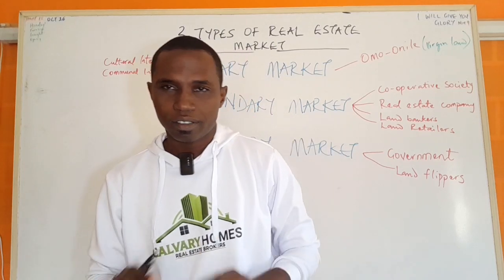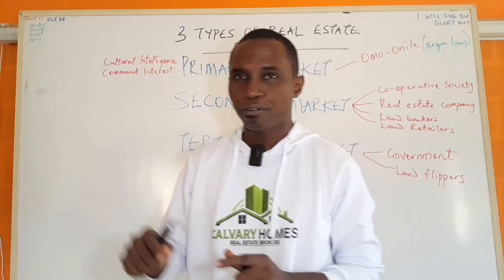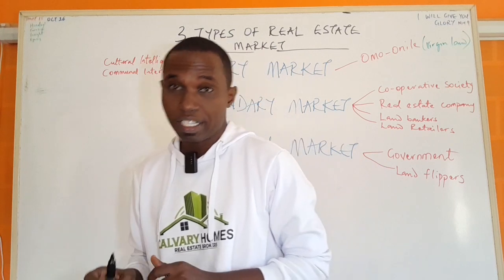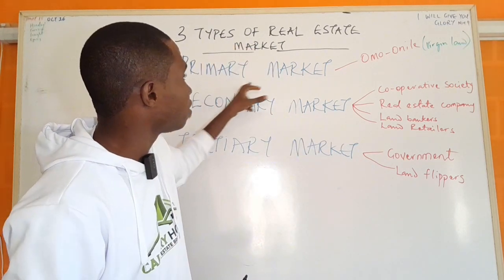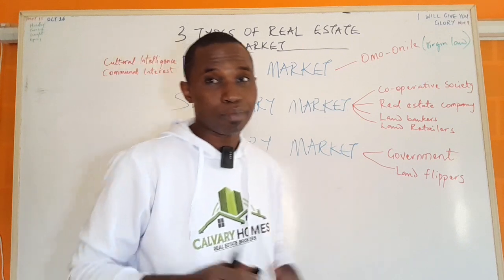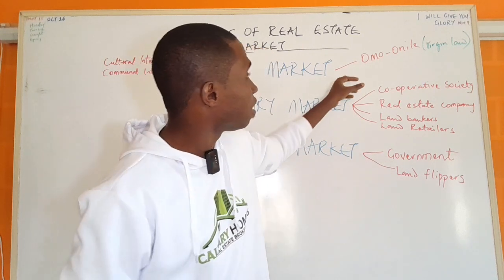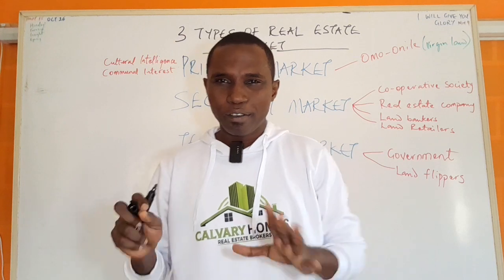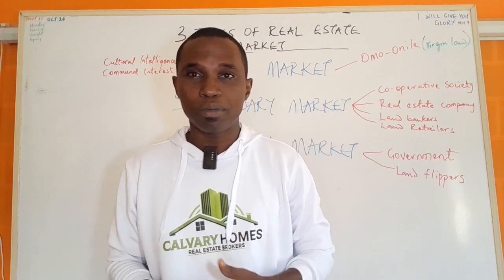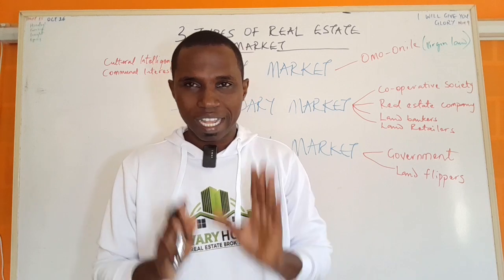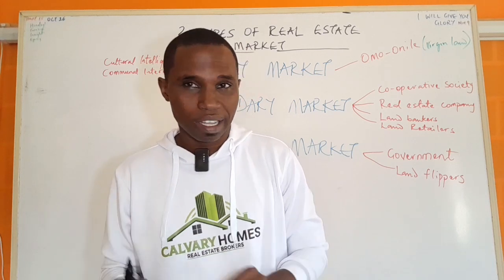Let's talk about the three types of markets in real estate. The first type is the primary market. The primary market is you buying directly from the ancestral owners — we call them the omonile — so that is you buying from the primary markets.